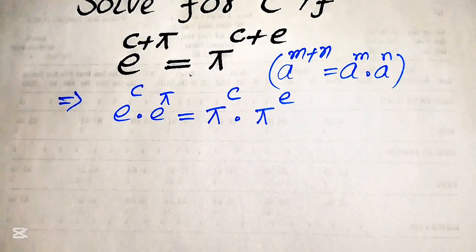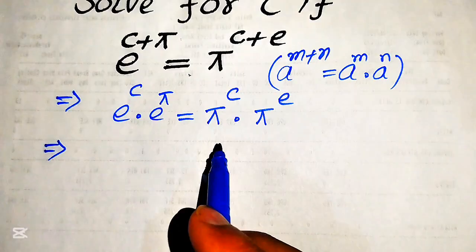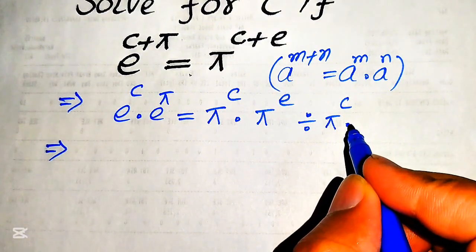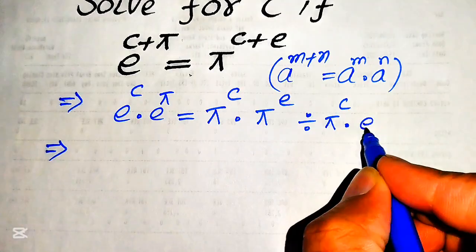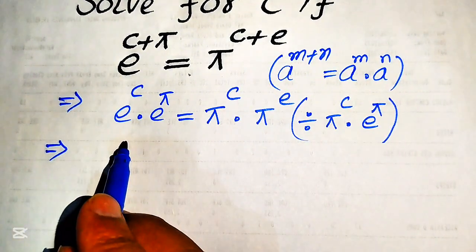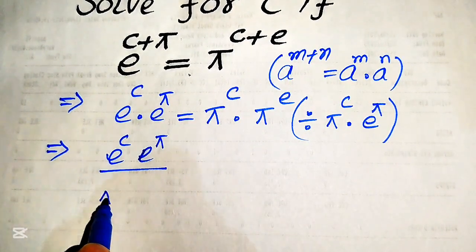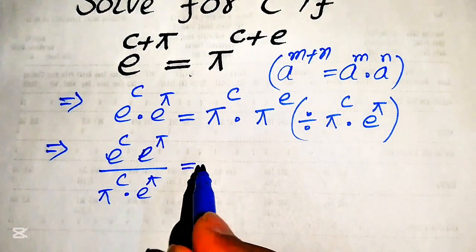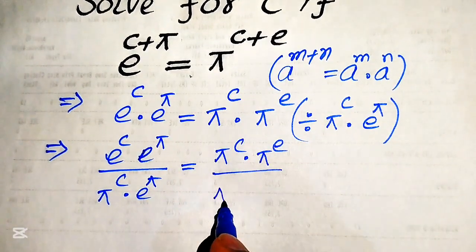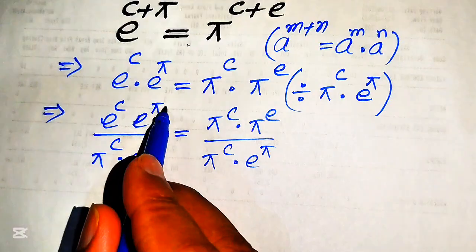In the next step, we combine the variable terms on the left-hand side. For this, we divide both sides by pi to the power of c and e to the power of pi. So the equation becomes: e to the power of c times e to the power of pi, divided by pi to the power of c times e to the power of pi, equals pi to the power of c times pi to the power of e, divided by pi to the power of c times e to the power of pi.